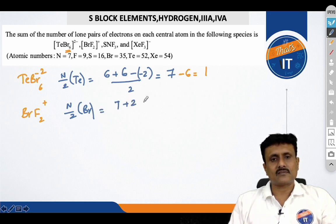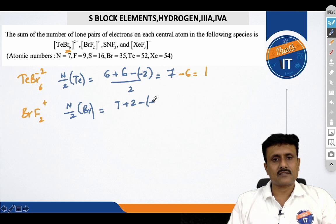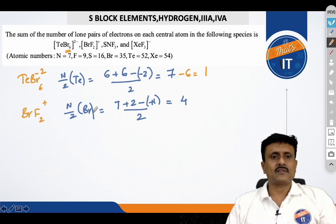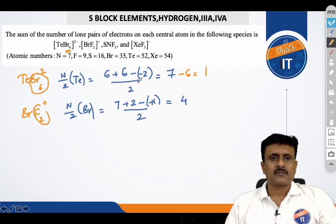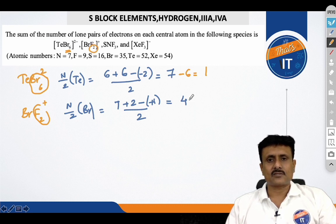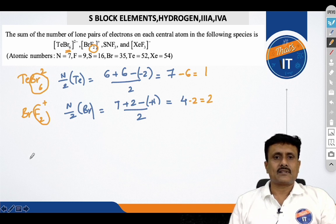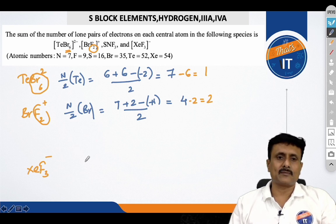BrF2 plus. So, you have to find out the N by 2 of the central atom. Central atom is bromine. Valence electrons of bromine, seventh group, plus 2 halogens are attached, minus of charge by 2. So, this is turning out to be 8 by 2, that is 4, minus, you must see how many atoms are attached to it. So, you have to see how many atoms are attached, that is 2 atoms are attached, that means lone pairs are 2 here.